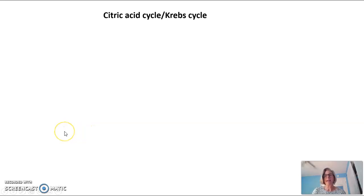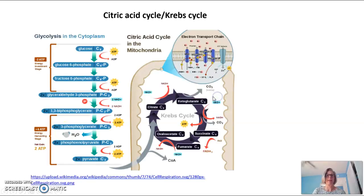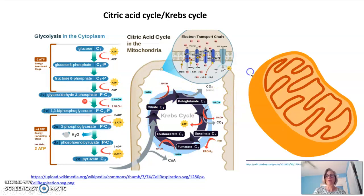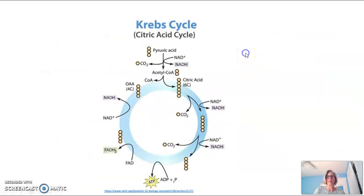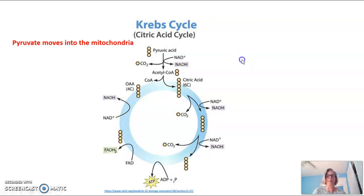Hi everyone. Tonight's video is on the citric acid or Krebs cycle, pictured here. The Krebs cycle or citric acid cycle happens in the matrix of the mitochondria, which is the innermost space of the mitochondria. So let's look at the Krebs cycle in a much closer view.